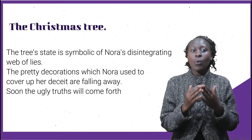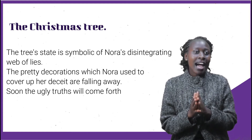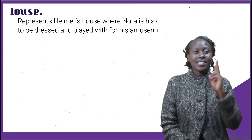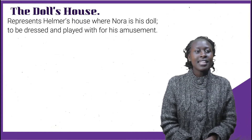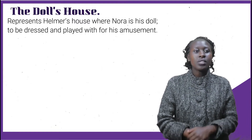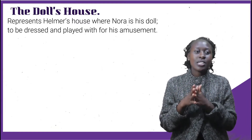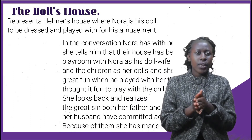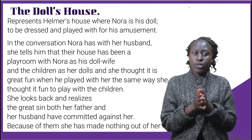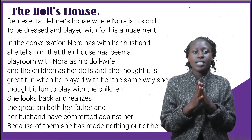The tree's state is symbolic of Nora's disintegrating web of lies. The pretty decorations which Nora uses to cover up her deceits are falling away, and soon the ugly truth will come forth. The doll's house is the second symbol, which represents Helmer's house where Nora is his doll, to be dressed and played with for his amusement.